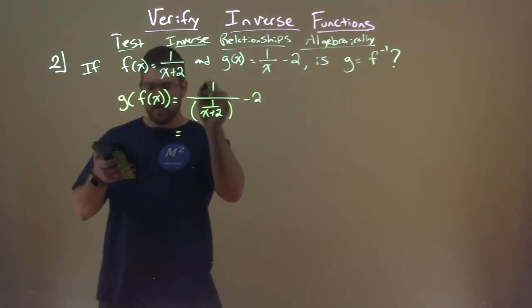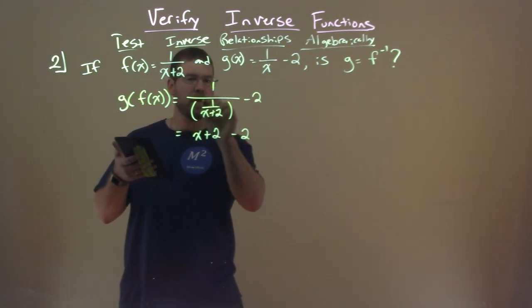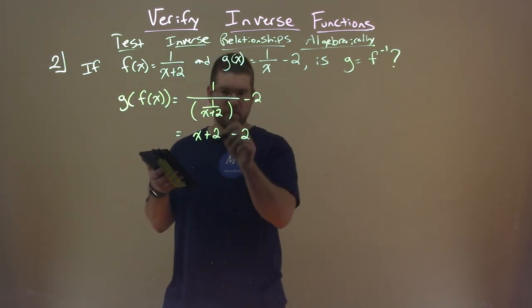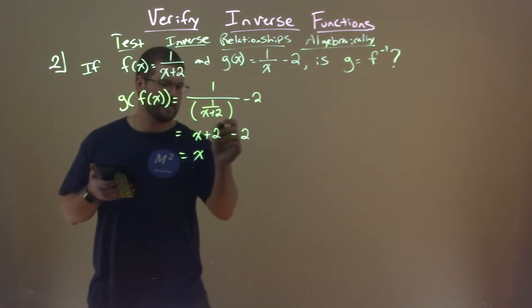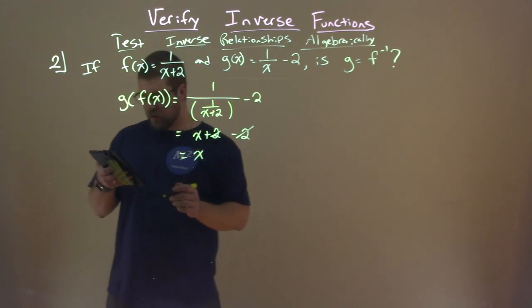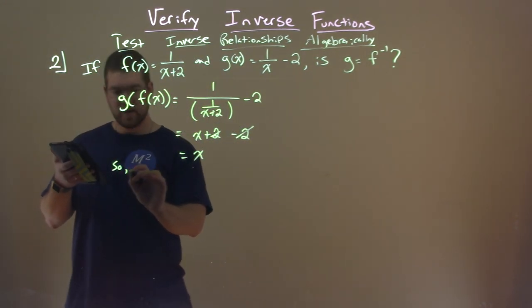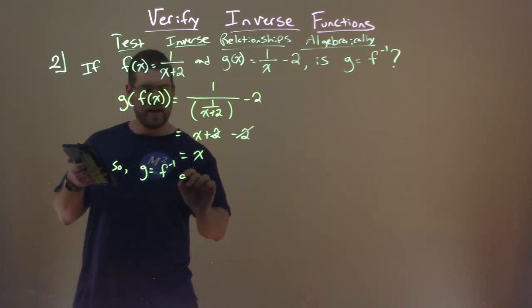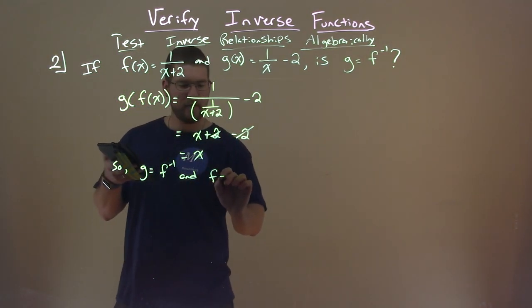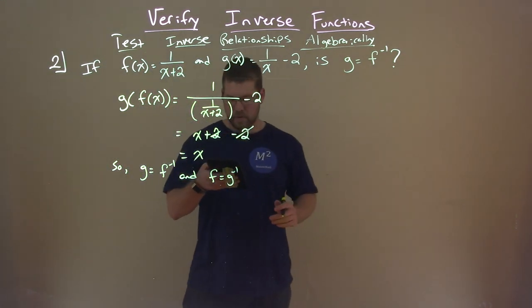Let's simplify that. This becomes x plus 2 minus 2. This double division fraction becomes x plus 2, and that equals x. The 2's cancel, so we're good. We can say that g equals f inverse and f equals g inverse.